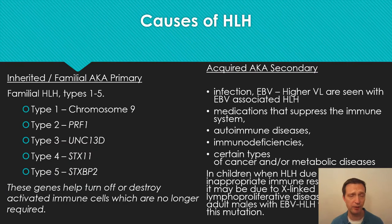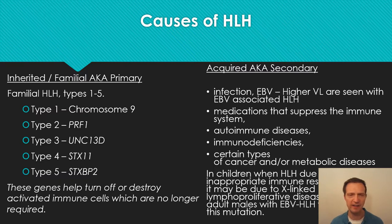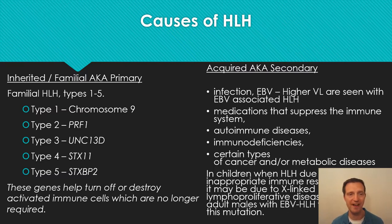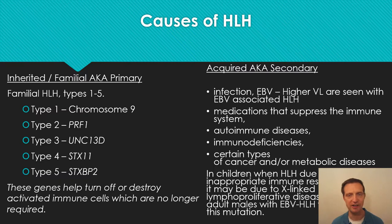The causes can be split into two: on one side is the familial form and the other side is the acquired. For the familial, there are five known types, and the immune system should normally turn off cells that are no longer needed, but there's damage to various areas of the genome, so the body doesn't destroy these immune cells.